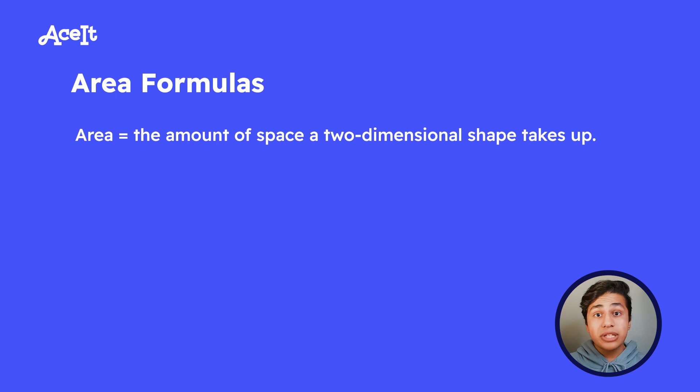I wanted to start off with talking about area formulas. Area simply just refers to the amount of space that a two-dimensional shape takes up. So for two-dimensional shapes, I want you to think of things that are flat, things like squares, rectangles, circles, triangles, parallelograms, things like that.